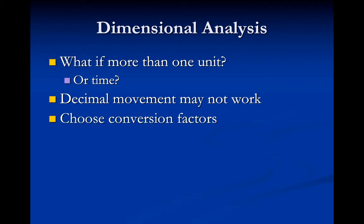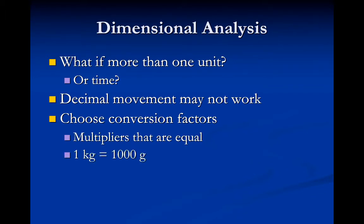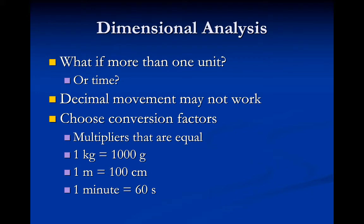To do this, I need to use what are called conversion factors — multipliers that are sort of equal to each other. For example, one kilogram is the same as 1,000 grams; one meter is the same as 100 centimeters; one minute is the same as 60 seconds. These things are equal, and when you go through the examples, you'll see what I'm talking about.